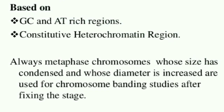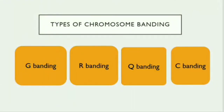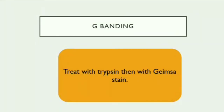A banding technique is classified based on two methods: based on GC and AT rich regions, and also based on the constitutive heterochromatin region. The four common types of chromosome banding are G-banding, R-banding, Q-banding, and C-banding. Apart from these four, there are other bandings like N-banding, but these four are the most common types.